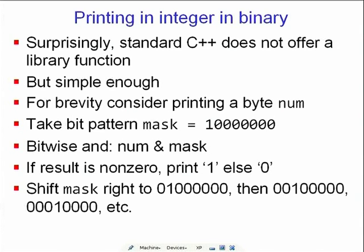For brevity, consider printing a byte number called num. Take the bit-pattern mask set to 1 followed by all zeros. Do a bitwise AND between num and mask: if the result is nonzero, print a 1, otherwise print a 0. Then shift the mask right so the 1 moves to the next position, and continue.